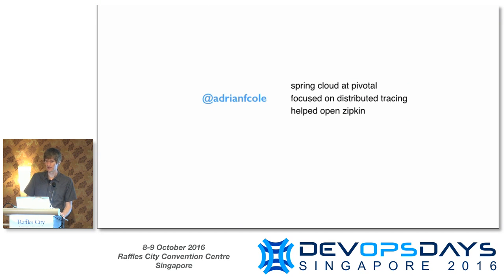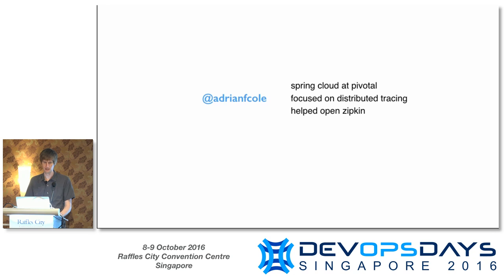My name is Adrian. I work in Spring Cloud at Pivotal, focused on distributed tracing, which is what I'm going to talk about. I worked on Zipkin at Twitter and still do today, and I've had DevOps roots — I once worked on a project called jclouds, which is about provisioning, so I'm comfortable with DevOps.